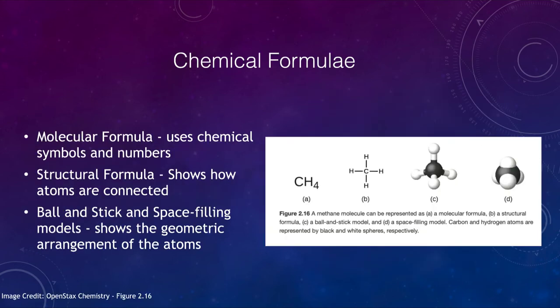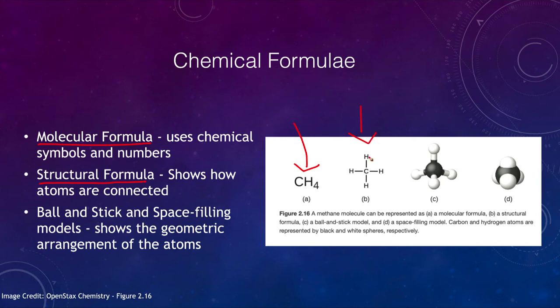Now we want to look at chemical formulae. There are different types. First, a molecular formula — such as CH₄ for methane — tells us the number of each type of atom: one carbon atom and four hydrogen atoms. But it doesn't give us more structural information. A structural formula shows a little bit more about how it's put together — a carbon atom connected to four individual hydrogen atoms — giving a better idea of the structure, though it's still not fully three-dimensional.